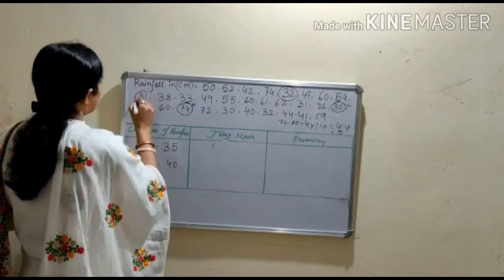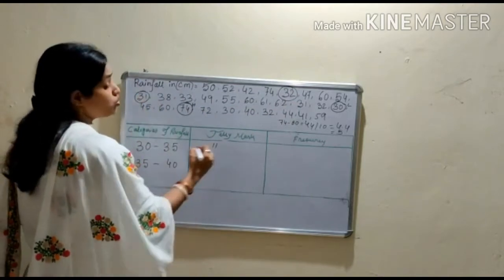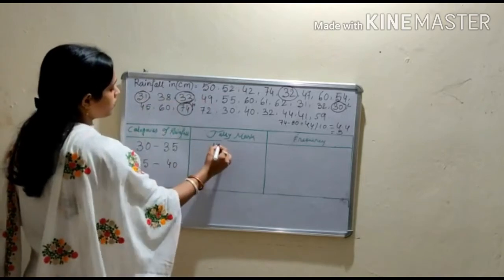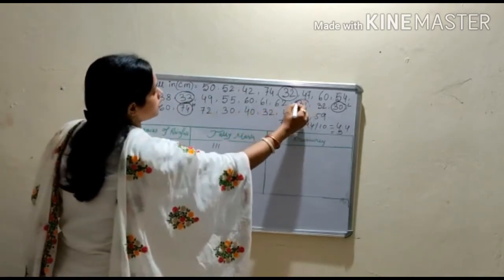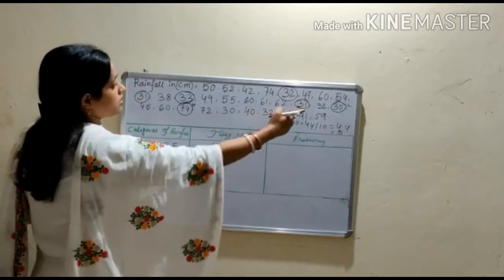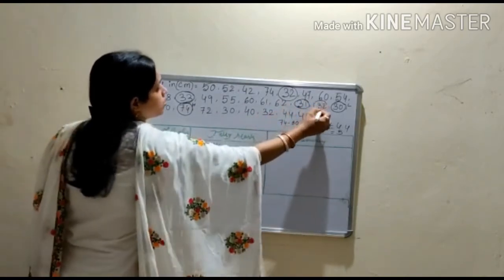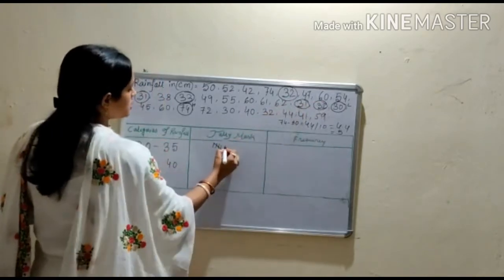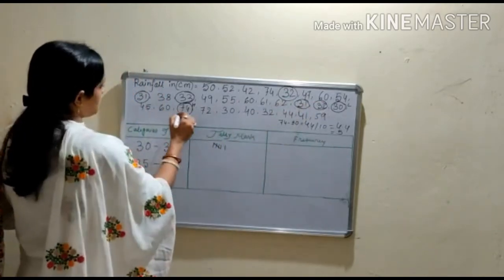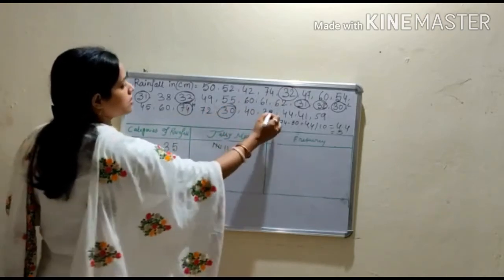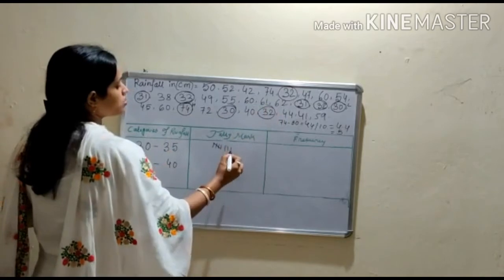The next is 31, that's 2. Then 33, that's 3. Then 31, 4. Then 32, 32, that's 5. Then we continue tallying, and our frequency here is 8.